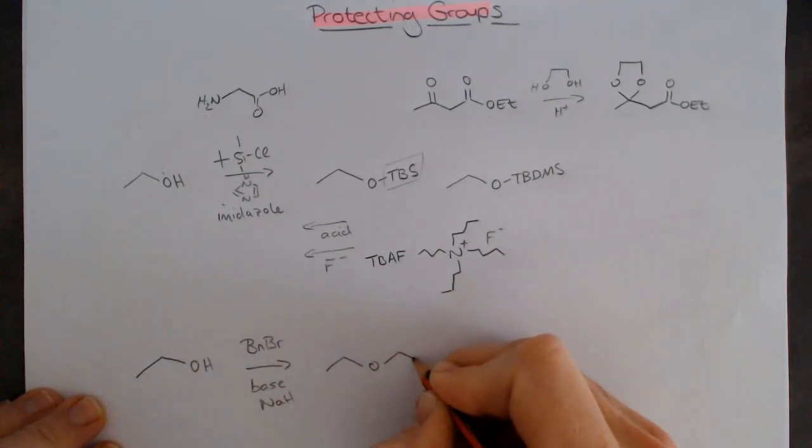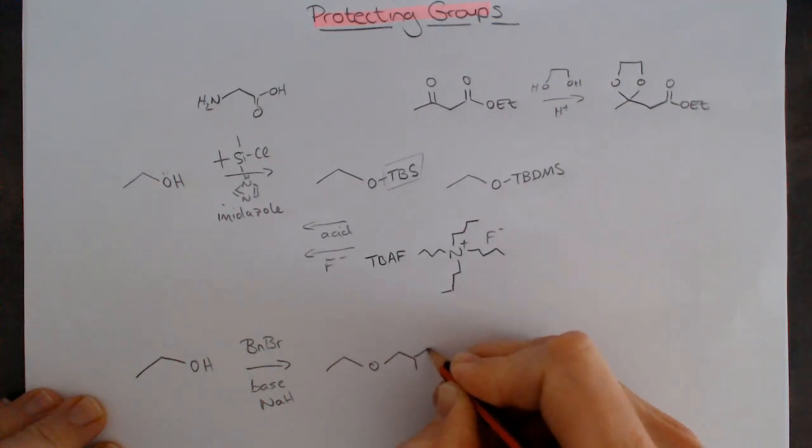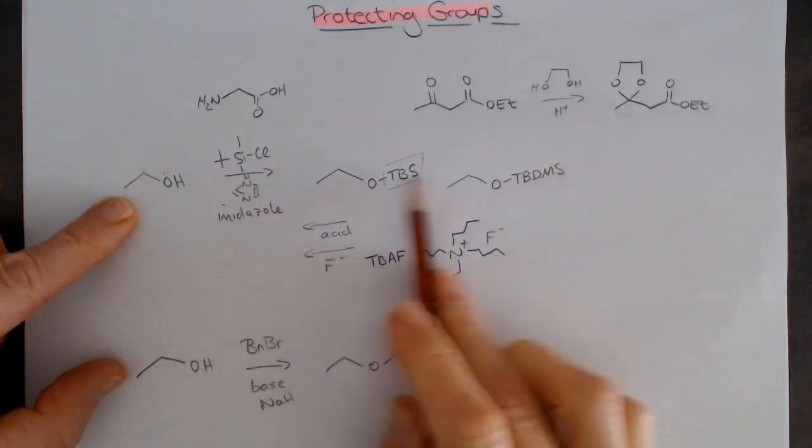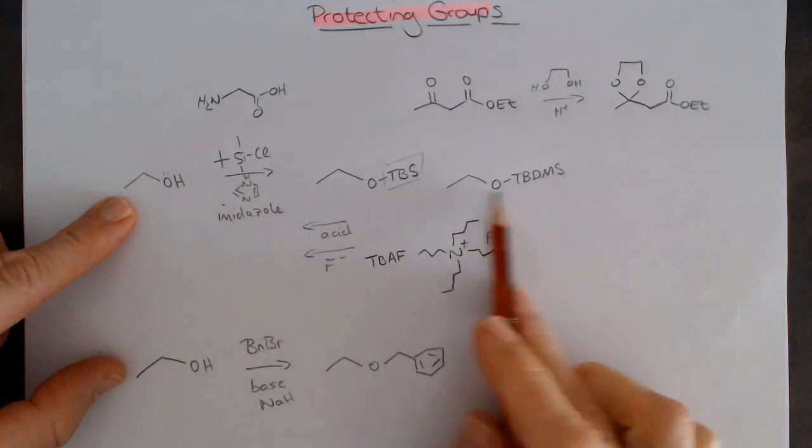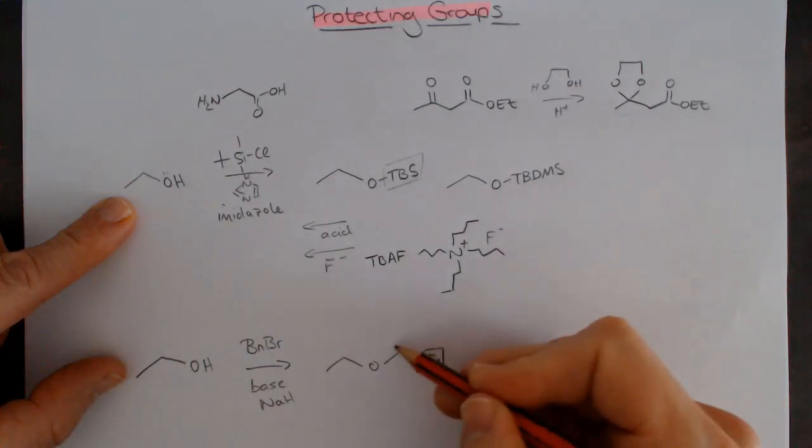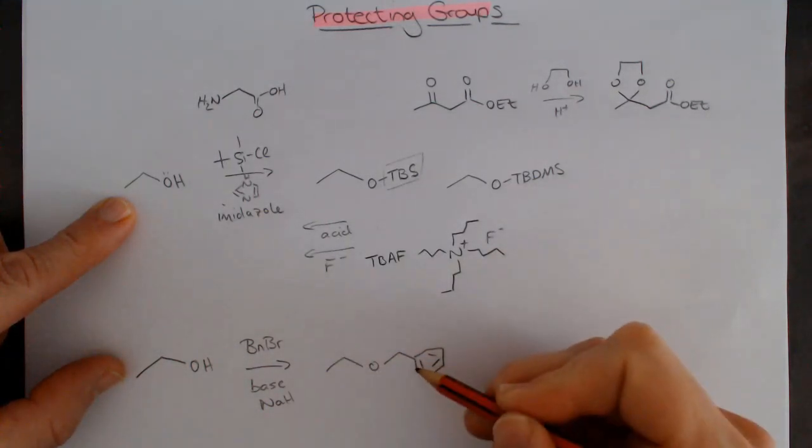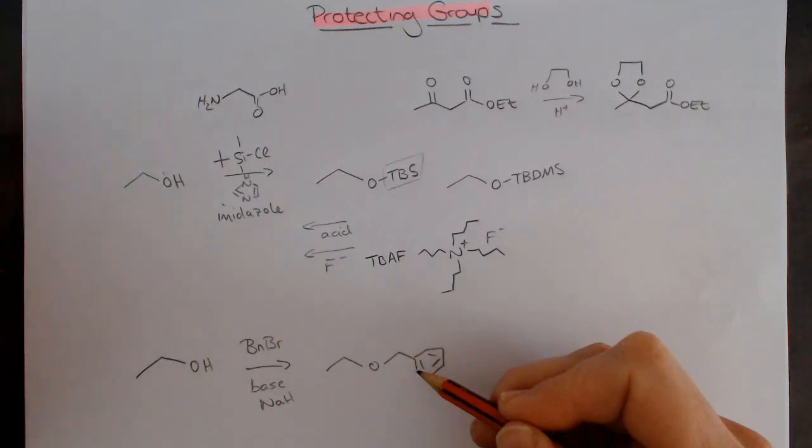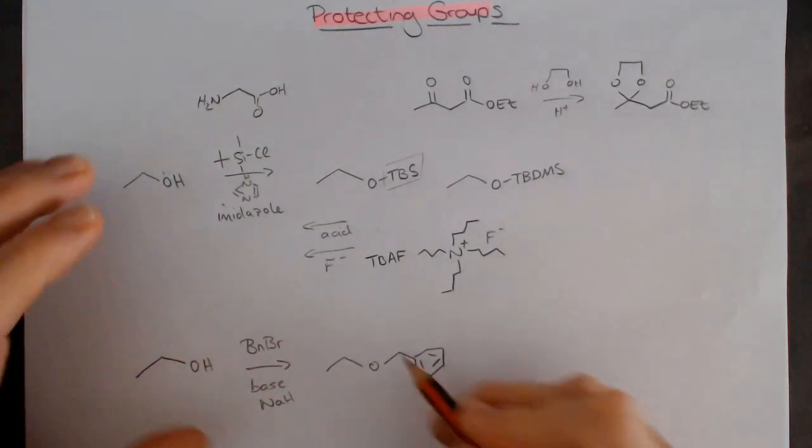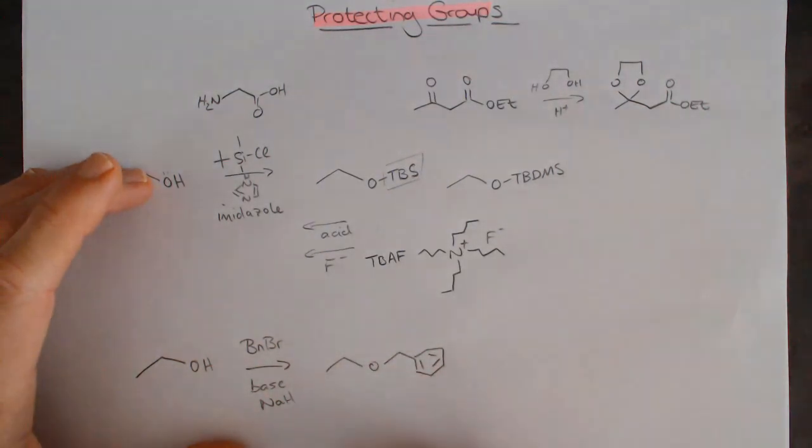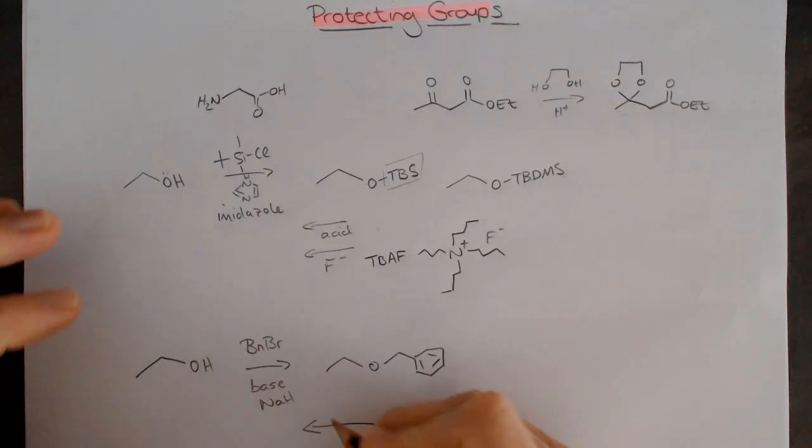Deprotonate this, you get the O- that can react with the benzyl bromide. The protecting group we're making is a benzyl ether. Here we've got a silyl ether being formed, and this is making a benzyl ether. The benzyl ether is really nice because an ether functional group is incredibly stable.